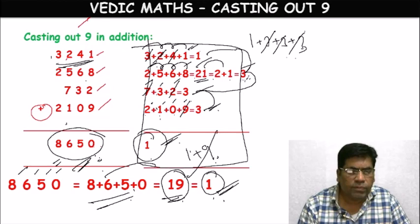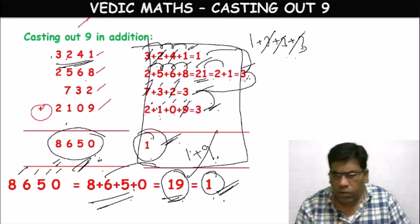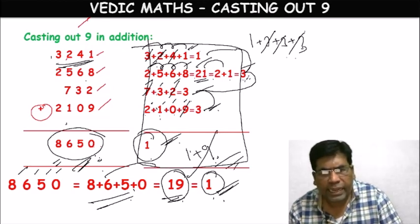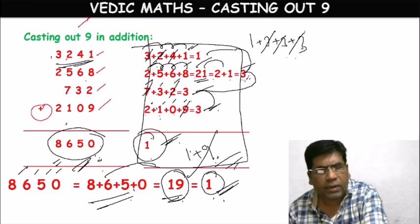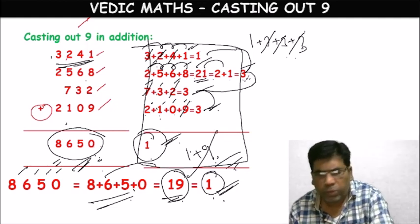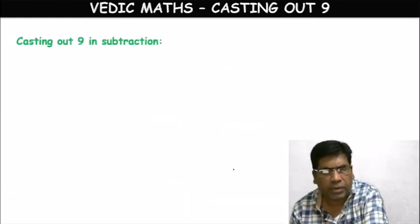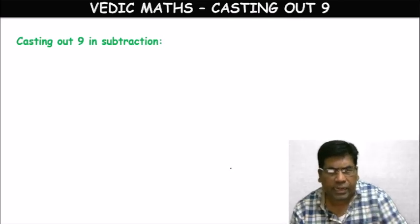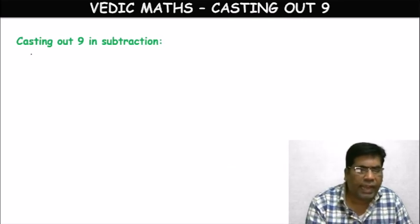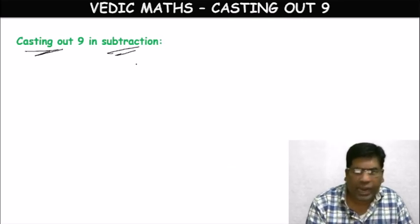In this way, we can apply the Casting Out Nines method while checking the correctness of any problem. We have checked for addition. Let us now see with another operation — subtraction.